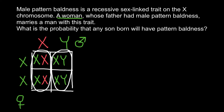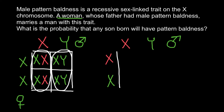Now we know the genotype of the woman. This woman is a carrier — she has one defective X chromosome and one normal X chromosome. She marries a man who also shows this trait, so the man has a defective X chromosome and a normal Y chromosome.